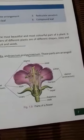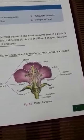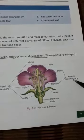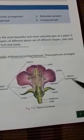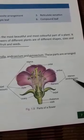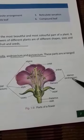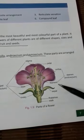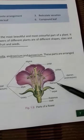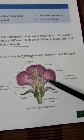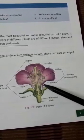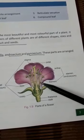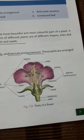Coming to the third part, that is androecium. Androecium is the male reproductive part of a plant. It consists of stamens, and each stamen has two parts: the anther and the filament. The anther is at the top and the thin thread-like structure is called the filament.